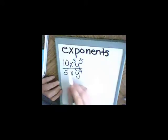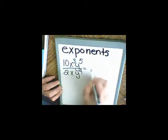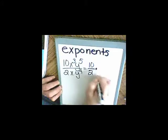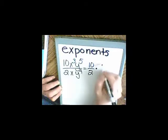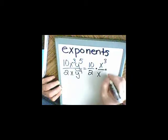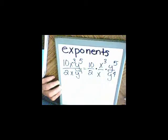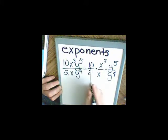Okay let's reduce this. What I like to do is break them up into like terms. So I'm going to have 10 over 2 times x to the 3rd over x times y to the 5th over y to the 4th. My next step is just to reduce. 10 over 2 is 5.